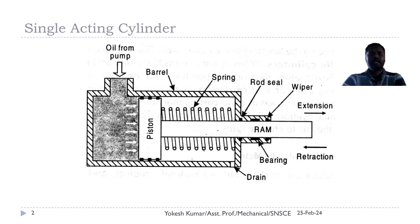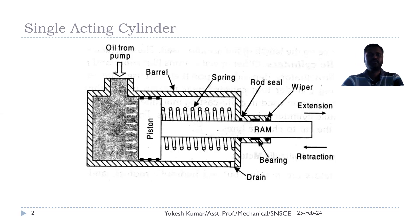Coming to the working: oil is pumped from the pump and enters the blank end of the cylinder. The pump keeps on pumping oil, which increases the pressure of the oil. The increasing oil pressure overcomes the spring pressure and pushes the piston, compressing the spring, which causes extension of the cylinder. Then if we change the direction control valve, the oil from the blank end of the cylinder is returned back into the reservoir.